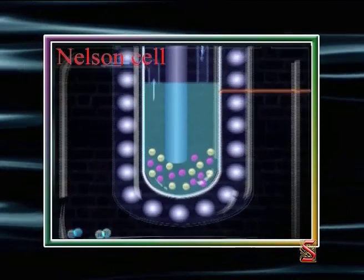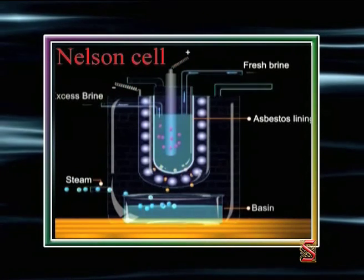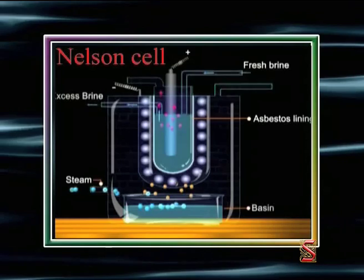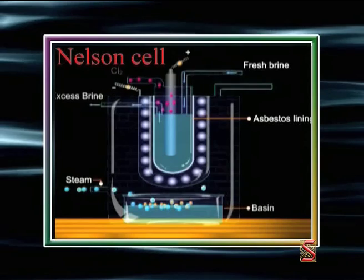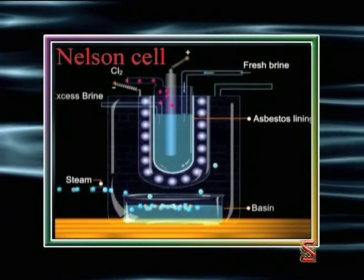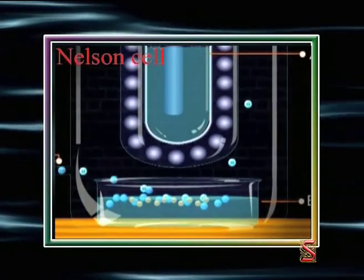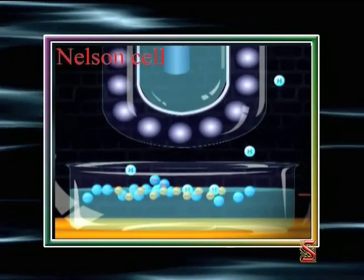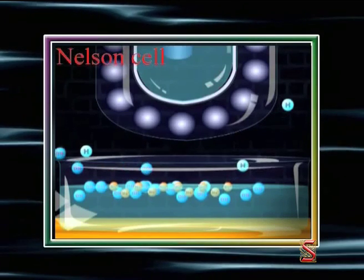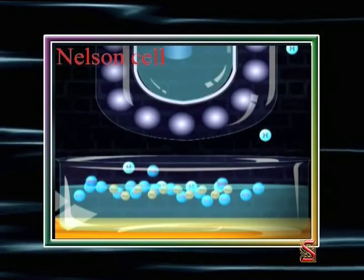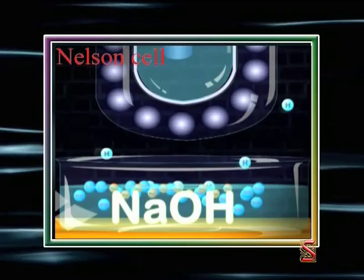A graphite rod suspended in the brine solution serves as the anode. On passing current, chlorine gas is liberated at the anode. Sodium ions pass through the asbestos and enter into the iron vessel. When steam is passed into the outer vessel, it decomposes at the cathode to form hydrogen, leaving OH⁻ ions. The sodium ions and OH⁻ ions combine to form sodium hydroxide, which is collected at the bottom of the vessel.